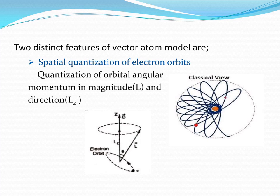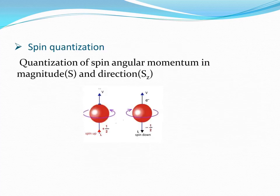According to the vector atom model, the orbital angular momentum in both magnitude and direction is quantized. Spatial quantization is defined as the quantization of the orbital angular momentum of an electron both in magnitude and direction in three-dimensional space along the direction of the external magnetic field. Spin quantization refers to the spin angular momentum of the electron, which is quantized in both magnitude and direction.